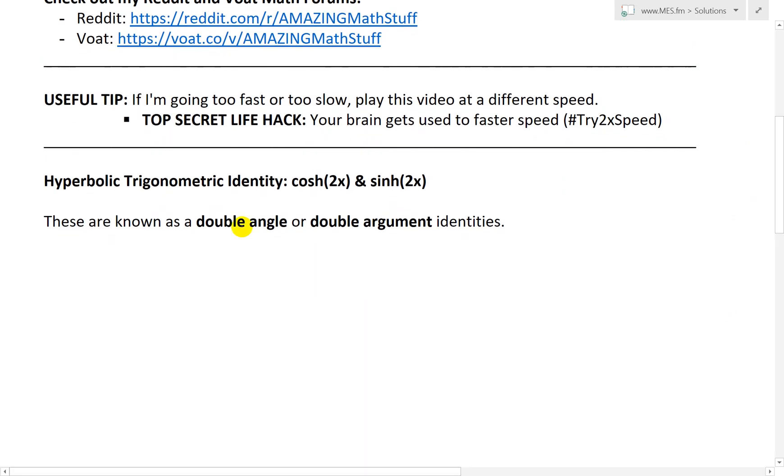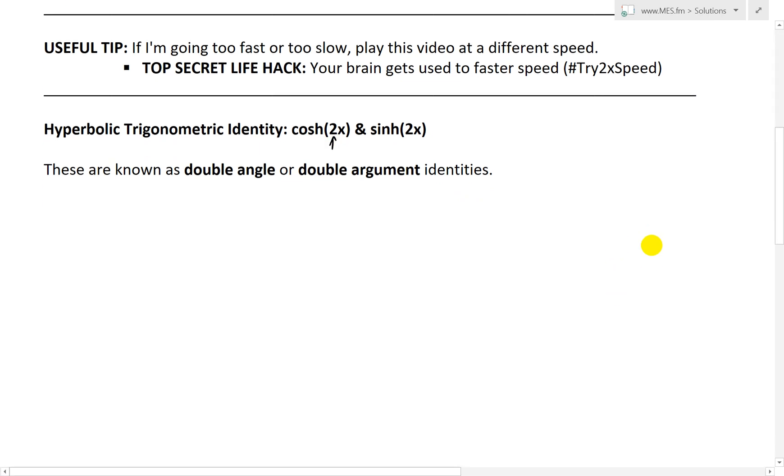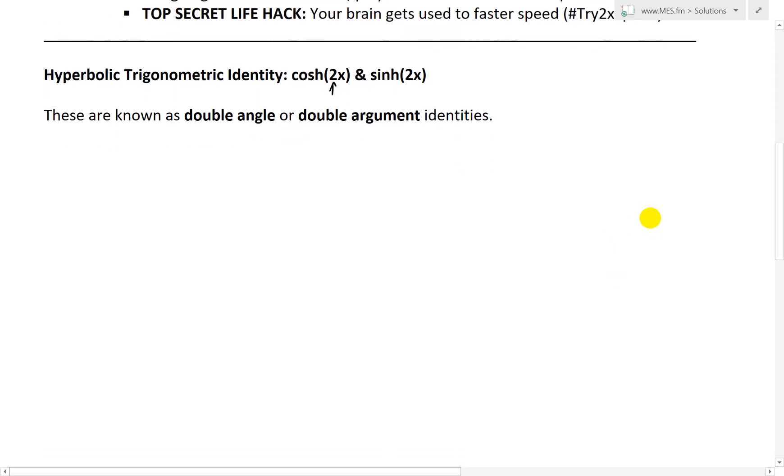These are known as double angle or double argument identities given by this 2 like that. And I want to solve both of these identities in one video just because they're fairly straightforward.